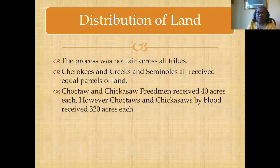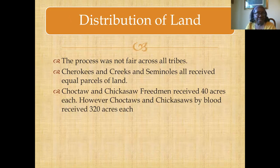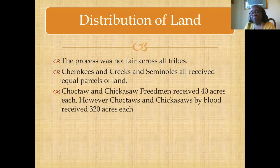It's important to understand you're going to find things that may leave you upset, because the process did not treat everyone equally. The process was not fair across all five of the tribes. Cherokees, Creeks, and Seminoles basically all received equal parcels of land. Choctaw and Chickasaw Freedmen received 40 acres each. But if you were on the roll by blood as Choctaw and Chickasaw, every person — including those babies — would have been allotted 320 acres of land. So Freedmen started out with one-eighth of the amount of land allotted to others in their same nation, born on the same soil.